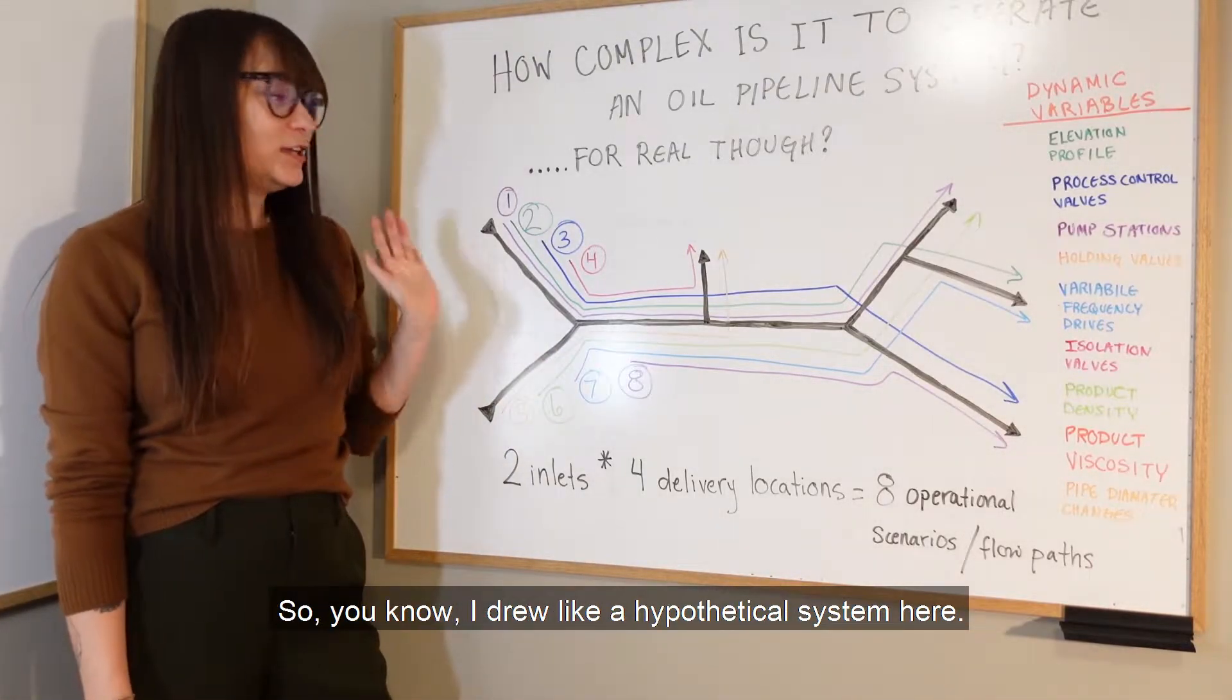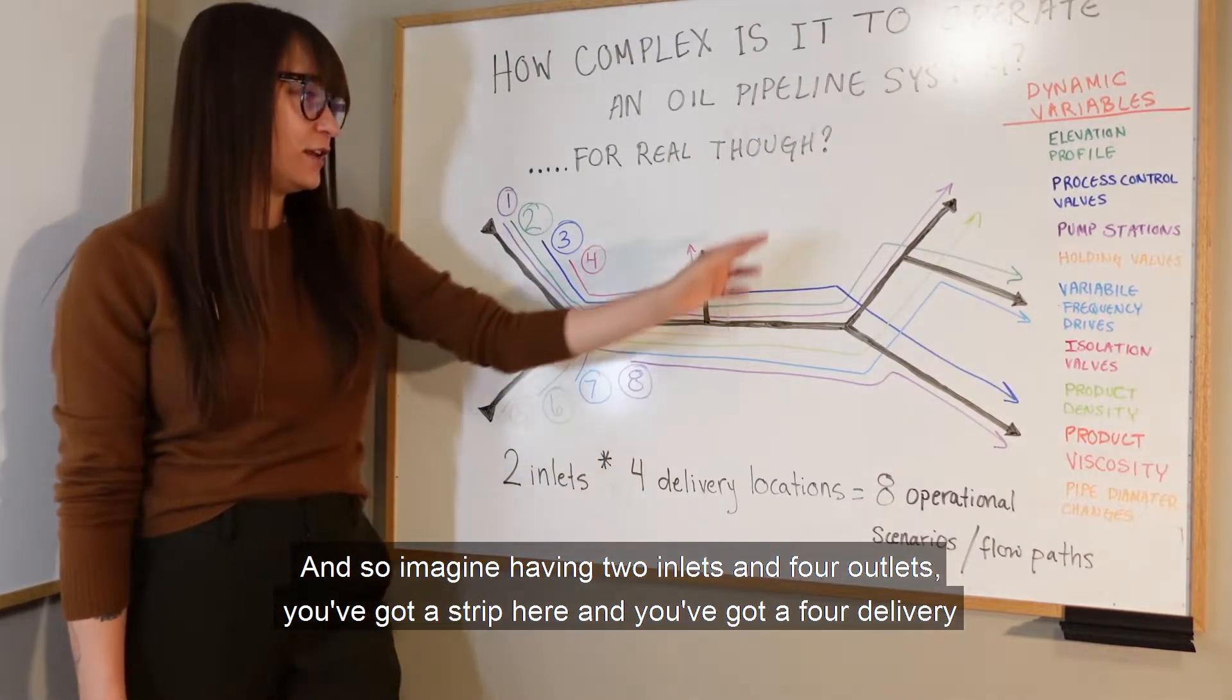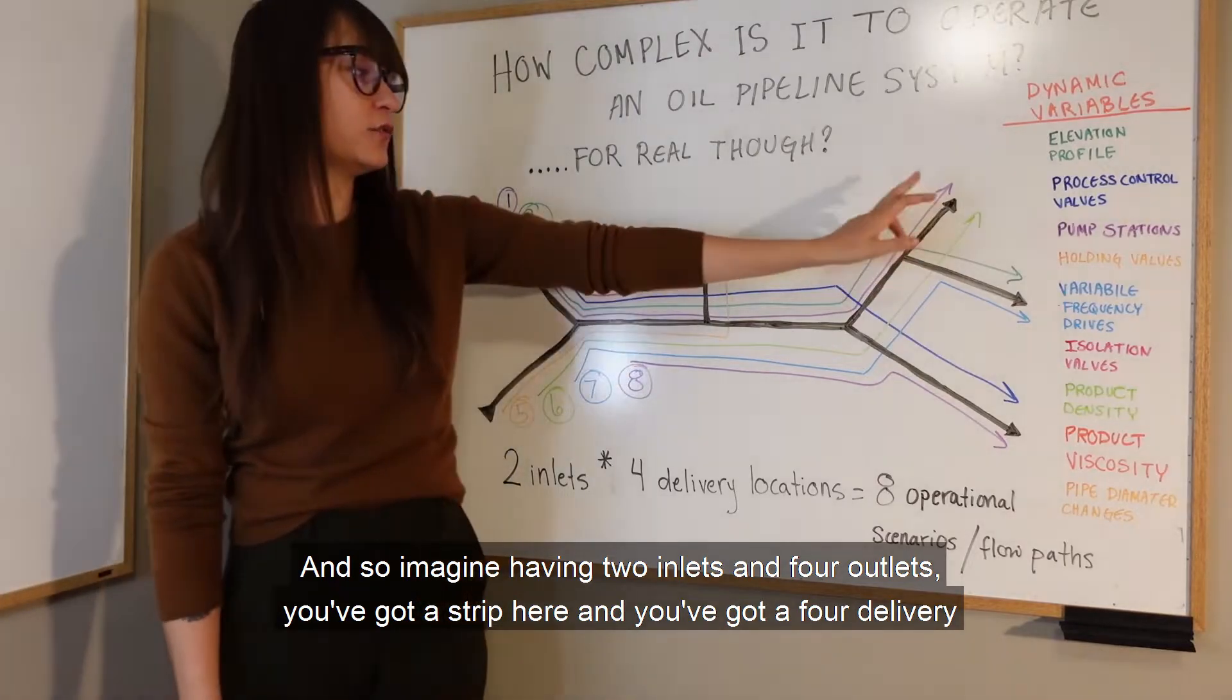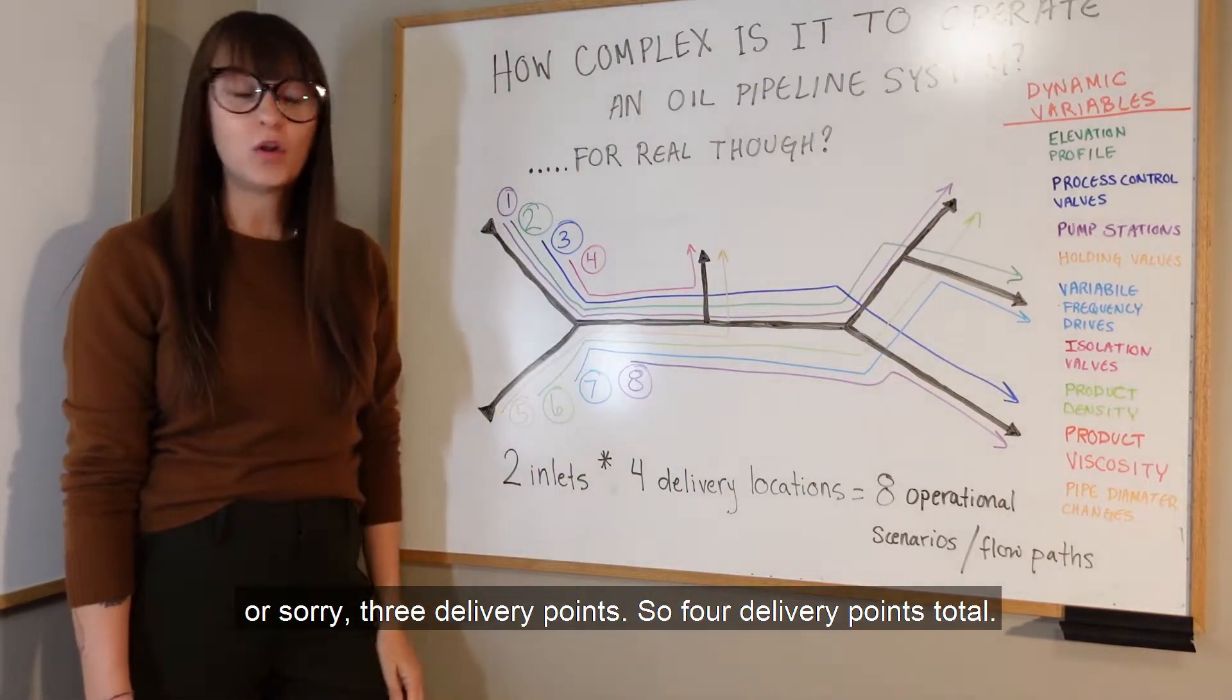I drew a hypothetical system here. Imagine having two inlets and four outlets. You've got a strip here and you've got four delivery points total.